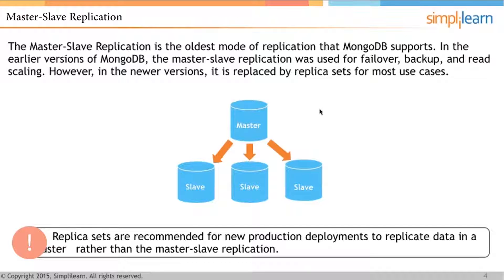Master-slave replication is the oldest mode of replication that MongoDB supports. In earlier versions of MongoDB, master-slave replication was used for failover, backup, and read scaling. In newer versions, it has been replaced by replica sets for most use cases.